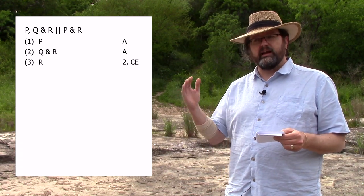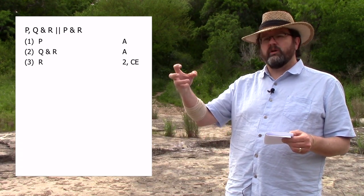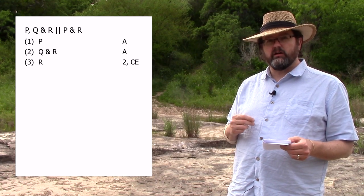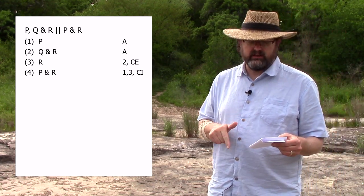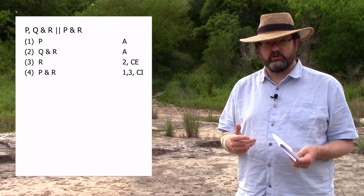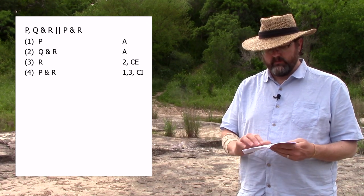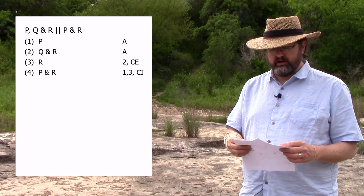We pull out R from conjunction Q and R, giving our citation as line two using conjunction elimination. Now we have P on one line and R on another, and we can infer the conjunction P and R using lines one and three with conjunction introduction.